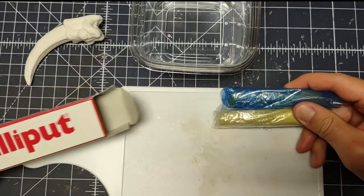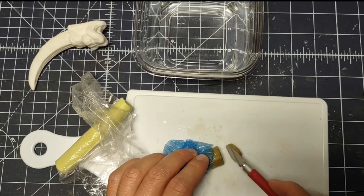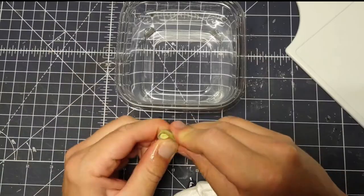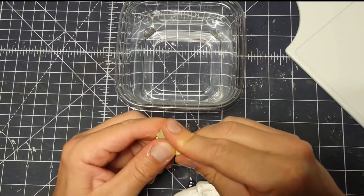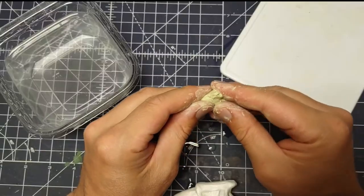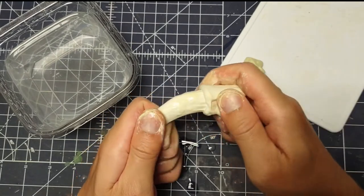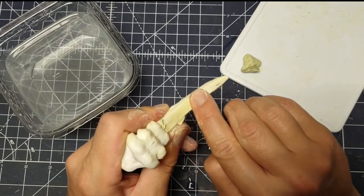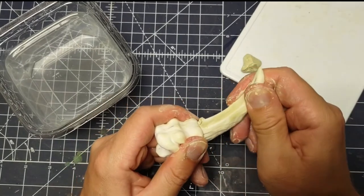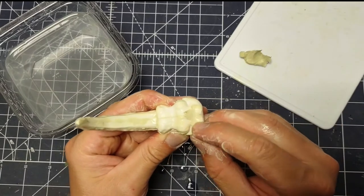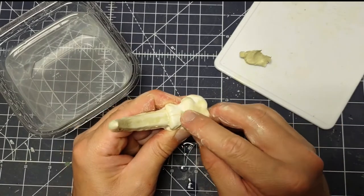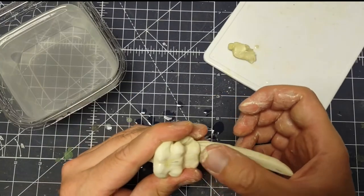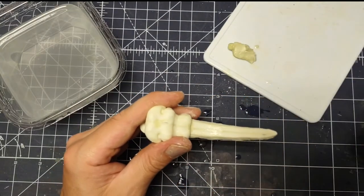I decided to use milliput to fill in all the gaps and to overall smooth out the surface. Mix the two parts together until you end up with a uniformed substance. I used plenty of water to get the substance to a more liquid state, thinking it would help it get into all the tiny gaps. You can also use some paper towel to help wipe off the excess milliput.